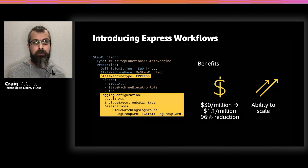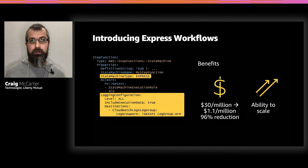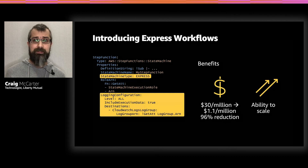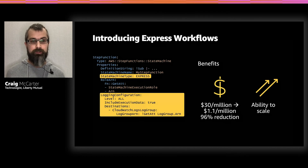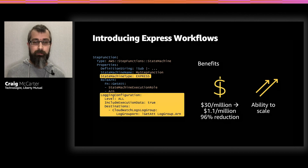A word about migrating from Step Functions to Express Workflows — it was really very simple. At Liberty, we manage all our infrastructure as code, so all we had to do was add the state machine type 'Express' into each of our CloudFormation templates. We went from having a fleet of Step Functions to having a fleet of Express Workflows. We also opted to add logging configuration so we could continue to monitor our workflows. The benefits have been staggering — we've gone from paying roughly $30 per million transactions using Step Functions, to paying $1.10 per million transactions using Express Workflows. That's a 96% reduction, largely due to the fact that our use case aligned perfectly with the Express Workflow use case: short, snappy invocations running massively concurrent workflows. On top of this, we also have a fantastic ability to scale far beyond what we do today.